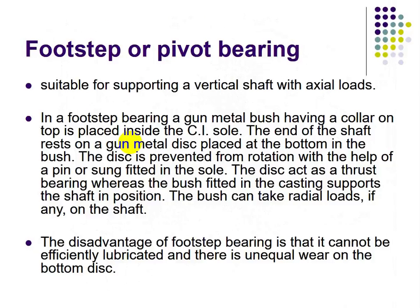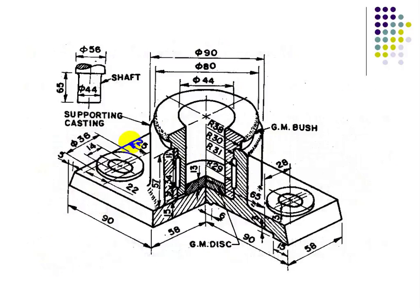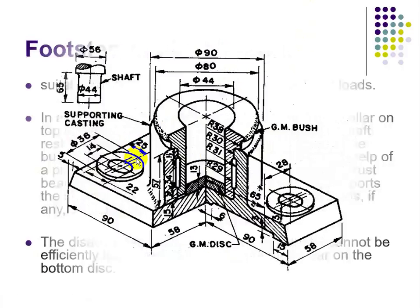A footstep or pivot bearing is suitable for supporting a vertical shaft with axial loads. A gun metal bush with a collar on top is placed inside a cast iron socket. The end of the shaft rests on a gun metal disc placed at the bottom; the disc is prevented from rotation by a pin fitted on the socket. The bush can take radial loads if any. A disadvantage of the footstep bearing is that it cannot be effectively lubricated and there is unequal wear on the bottom disc.